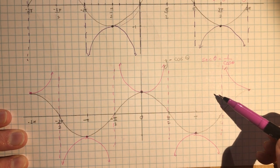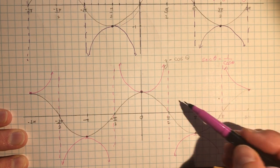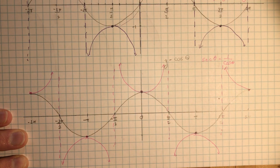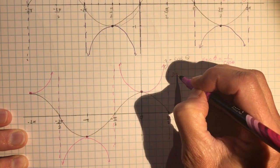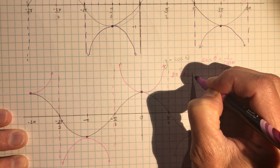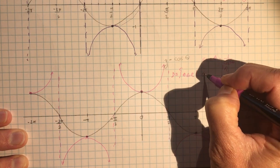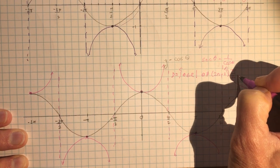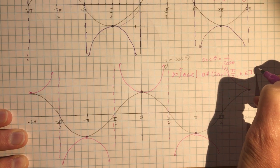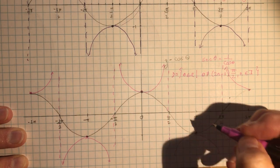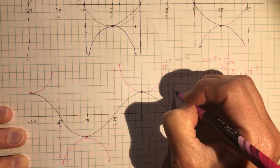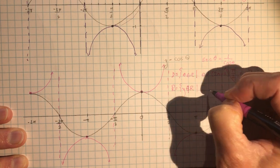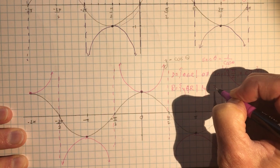For the secant function, same period of 2π, and vertical asymptotes where cosine was zero. The domain is a little different because the asymptotes are at π/2 and 3π/2, so: theta is an element of real numbers such that theta is not equal to (2n − 1) times π over 2, where n is an element of integers. The range is the same as for cosecant: y is an element of real numbers such that the absolute value of y is greater than or equal to one.